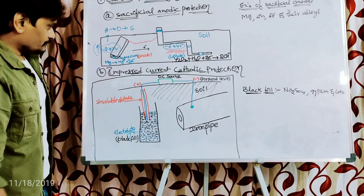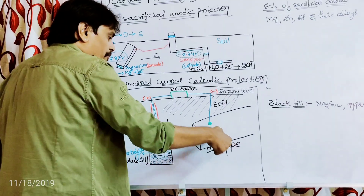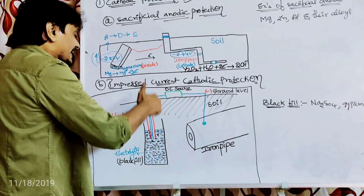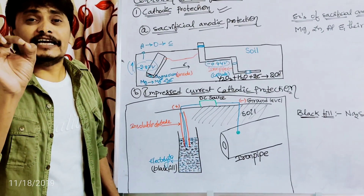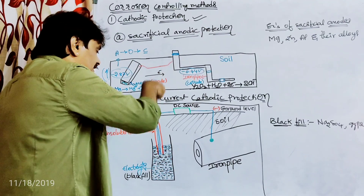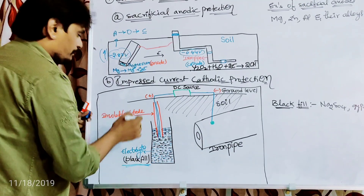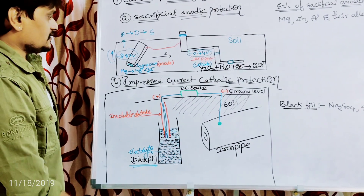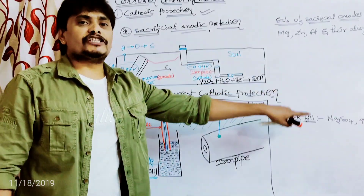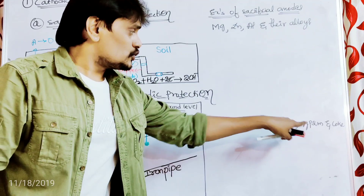In impressed current cathodic protection, we need a battery. The negative terminal of the battery should be connected to the base metal — whose corrosion is to be controlled. The positive terminal of the battery should be connected to an inert (unreactive) electrode. This inert electrode is buried in a backfill material. The backfill is a combination of sodium sulfate, gypsum, and coke, and it is used for proper electrical contact between the electrodes.